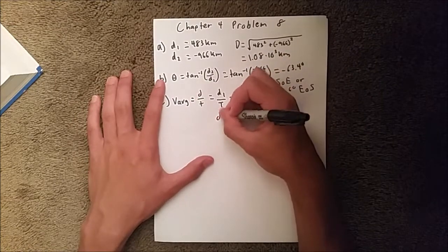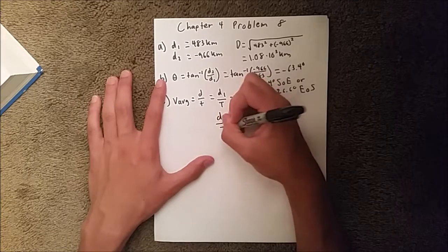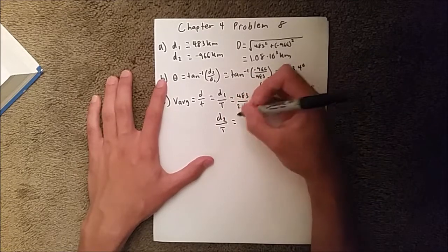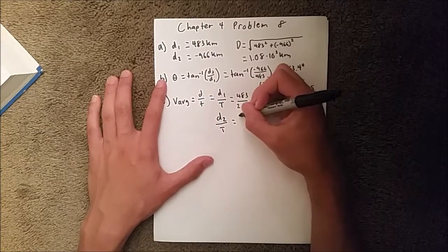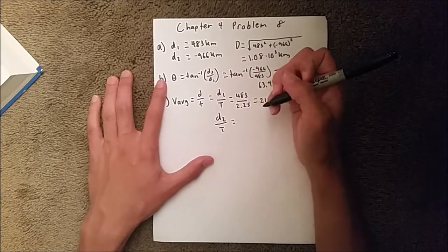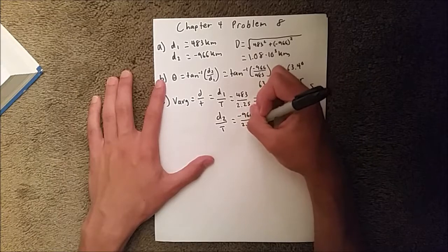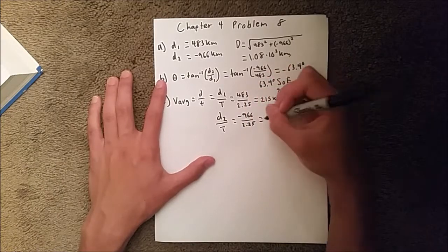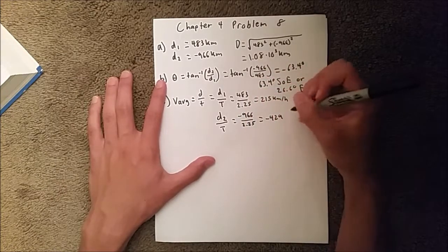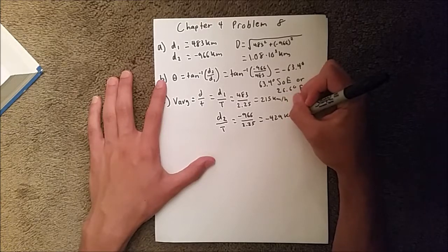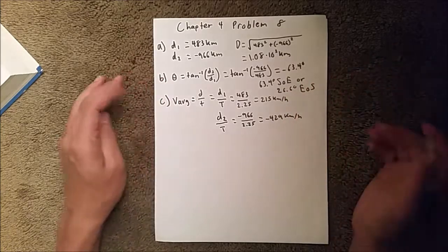And if we do the same thing for displacement number 2, we get negative 966 over 2.25, which equals negative 429 kilometers per hour. And this is magnitude.